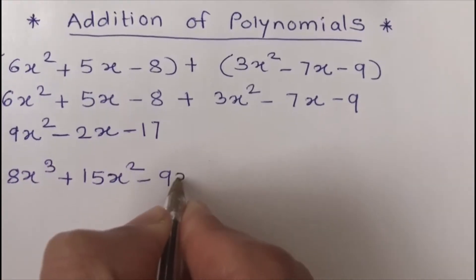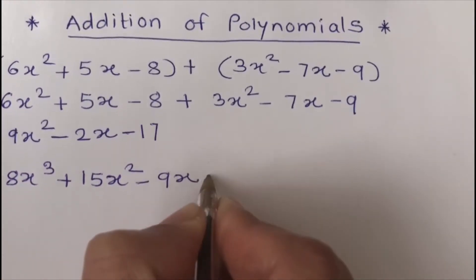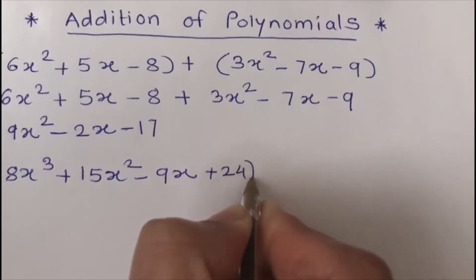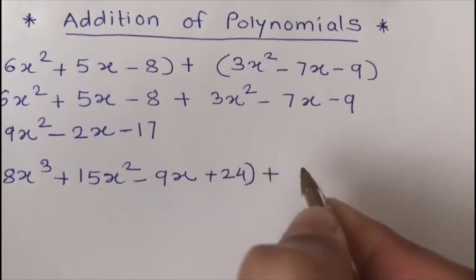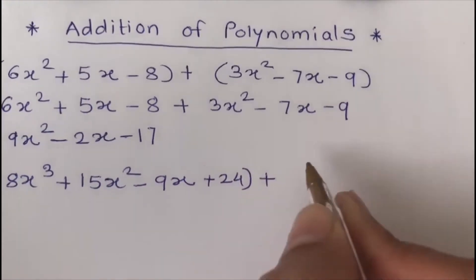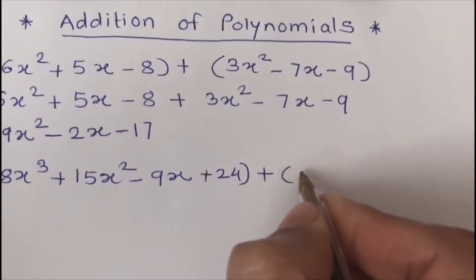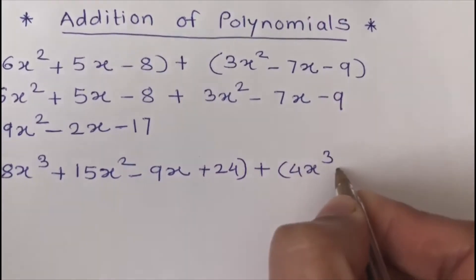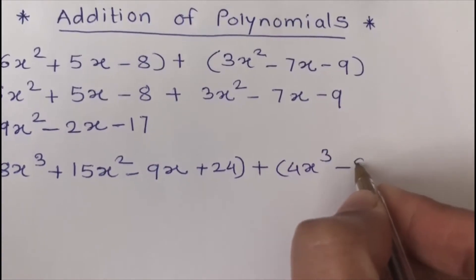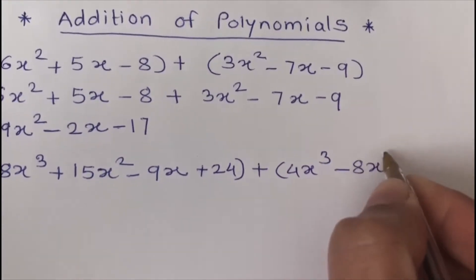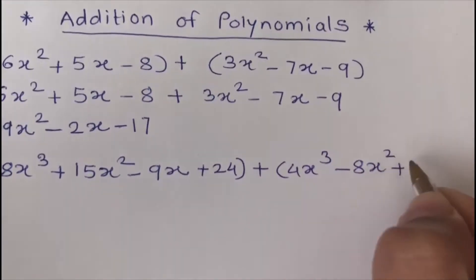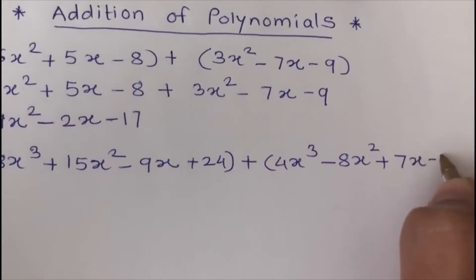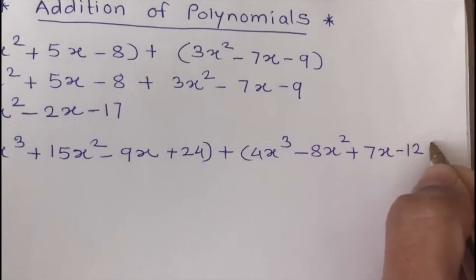The next example is: 8x cubed plus 15x squared minus 9x plus 24, plus, in another bracket, 4x cubed minus 8x squared plus 7x minus 12.